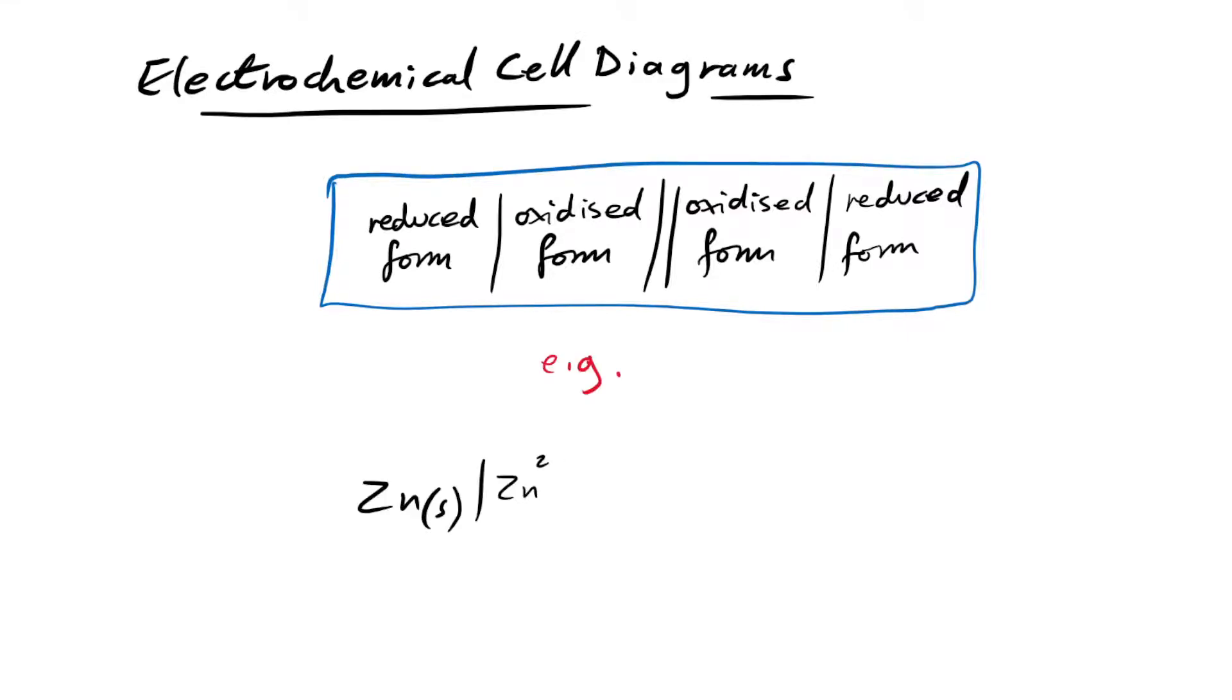So for example, for our setup that we had to begin with, it would be the solid zinc electrode, then the zinc ions in solution. Other side of the salt bridge, copper ions, and then the solid copper electrode.